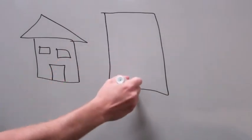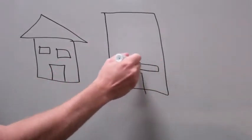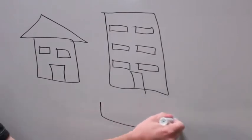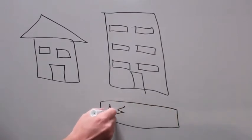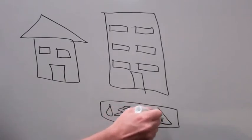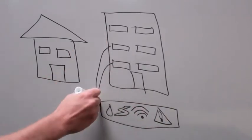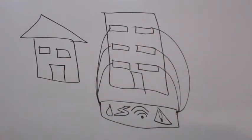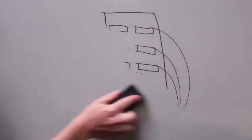Instead, consider an apartment building. None of the tenants in an apartment building need to create the necessary infrastructure to access water, sewer, electricity, the internet, or security. Why? Because it's already there, and none of the tenants care about how this infrastructure got there, only that it works and it's reliable.